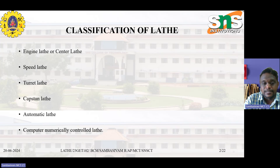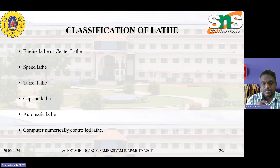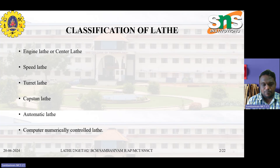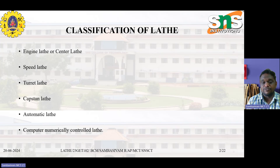The turret lathe is an adaptation of the engine lathe where the tailstock is replaced by a turret slider — a cylindrical or hexagonal shaped structure. The tool post of the engine lathe is replaced by a cross slide, which can hold various tools to perform various operations like drilling, reaming, chamfering, and making internal or external threads.